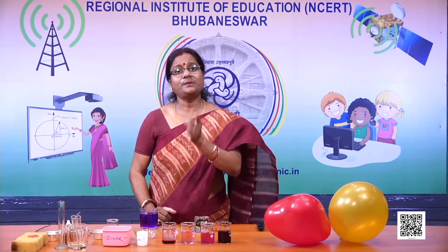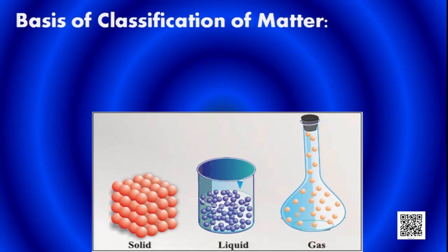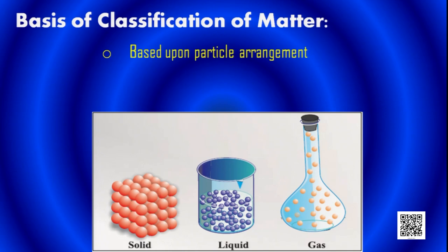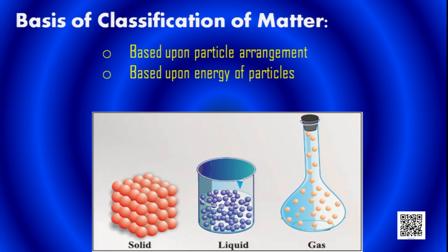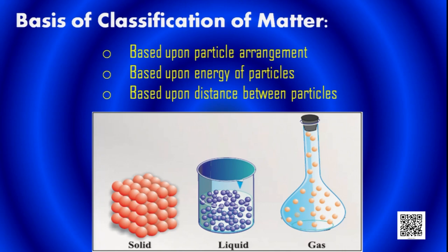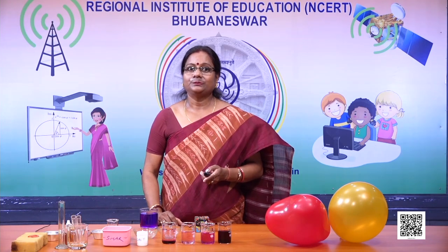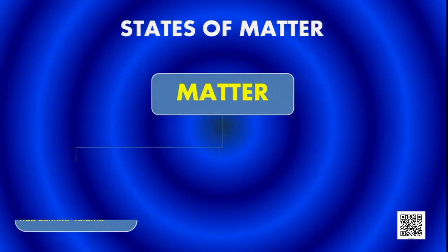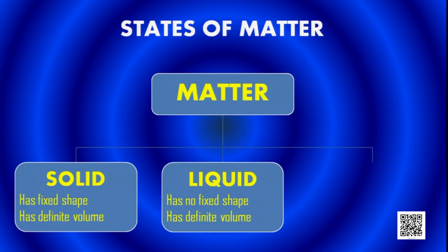Now children, matter can be classified. We can classify matter into solid, liquid, and gas. On what basis? Based upon the particle arrangement — you can see the differences in the figure. The classification is also based on the energy of the particles and the distance between the particles. States of matter are solids, liquid, and gas.